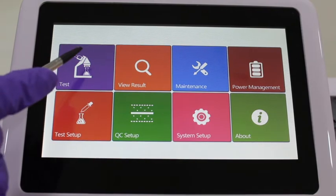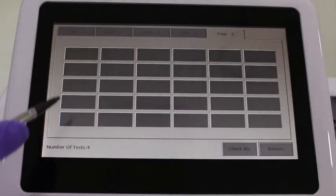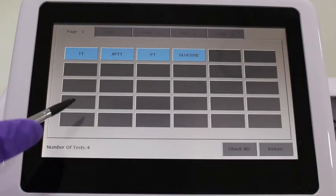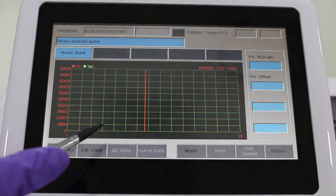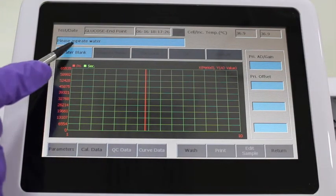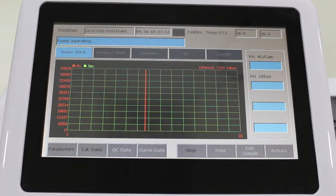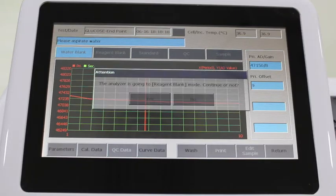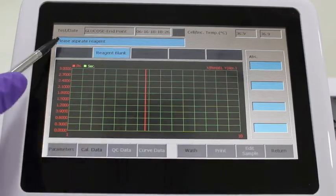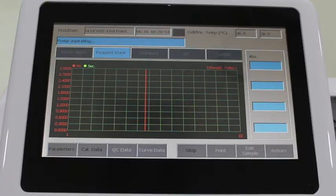Place the tubes including reagent blank in the incubator. Go to the menu screen and select test menu. In that, select the required page and then the required parameter. The testing page opens and message 'aspirate water' is displayed. Once distilled water is aspirated, the display shows 'pump aspirate.' Once aspirated, it displays 'testing in process' and the OD is displayed. Then it is ready for running the reagent blank.